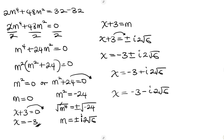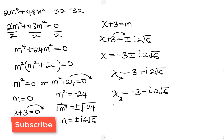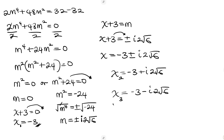So we have three values for x: x equals negative 3, x equals negative 3 plus 2i root 6, and x equals negative 3 minus 2i root 6. Feel free to share your ideas in the comment section below. If you enjoyed this video and learned something, give it a thumbs up, subscribe if you haven't, and turn on the notification bell so you don't miss upcoming videos. Until next time, take care.